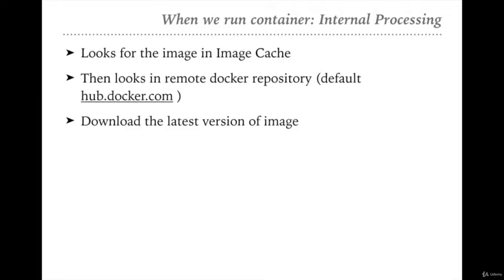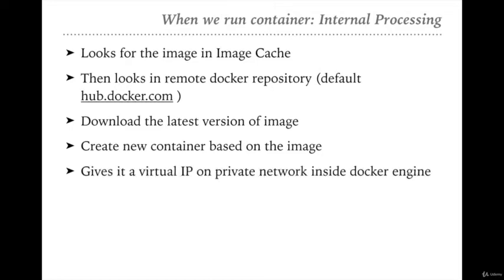After finding the image, Docker will start a new container based on it. From the networking point of view, Docker gives a virtual IP on the private network inside the Docker engine, on which that particular container will execute. Docker internally assigns an IP to that particular container.